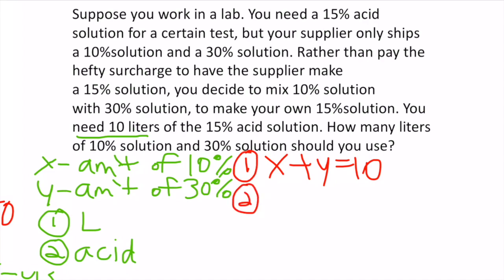The amount of acid from the first solution is 0.1x, and from the second is 0.3y. Converting percentages to decimals and multiplying each variable, I know I'll have 10 liters of 15% solution, so the right side is 10 × 0.15 = 1.5. Equation 2: 0.1x + 0.3y = 1.5.